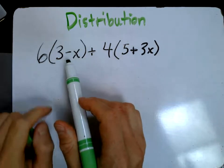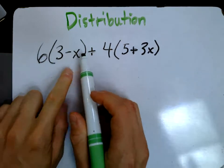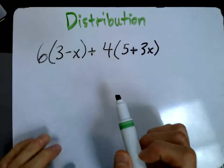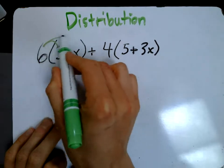we need to do parentheses first, but we don't know the value of x, so we can't really simplify this unless we use our friend the distributive property. Just like Oprah, this means you get a six and you get a six.